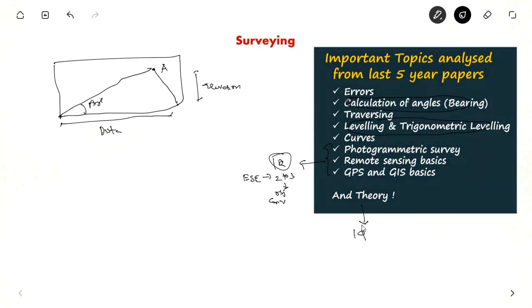Surveying is the most easiest to score because there are not much new questions. So, you should look to score fully. This is all about important topics and how to get the marks.